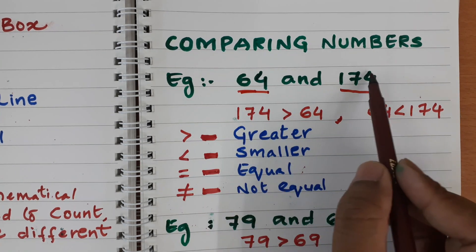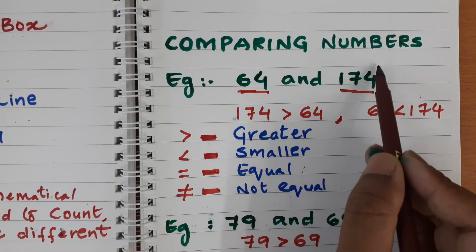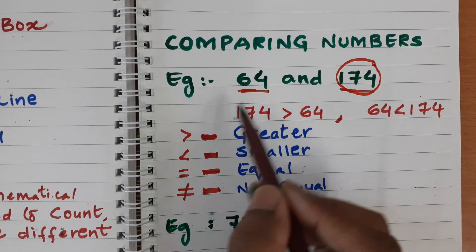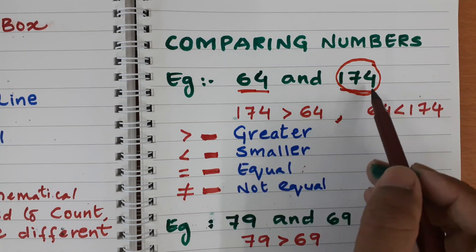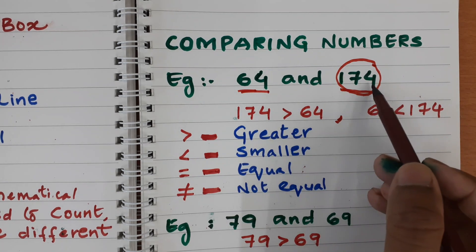Like this also we can compare the numbers, counting number of digits. Here we have three digits, here we have only two digits. So of course, clearly three digit number is big.